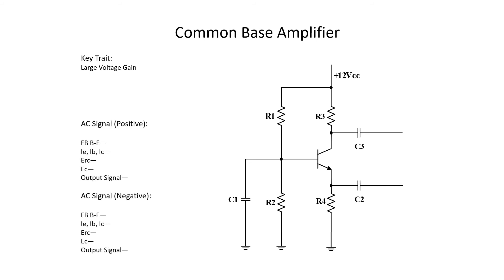When the AC signal on the emitter alternates positive, the base voltage stays the same. So as the emitter rises, the 0.6–0.7 volt gap needed for the transistor to conduct gets smaller — forward bias decreases. As forward bias goes down, emitter, base, and collector current all decrease. Less current through collector resistor R3 means less voltage drop there, leaving more voltage on the collector, so the output signal goes positive — with a large voltage gain. When the incoming AC alternates negative, forward bias increases, current flow increases through R3, creating a greater voltage drop and leaving less voltage on the collector, so the output alternates negative. Again, large voltage gain.